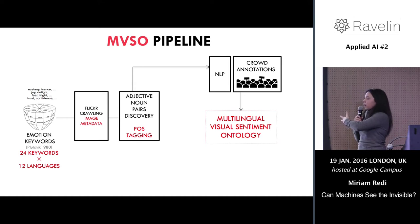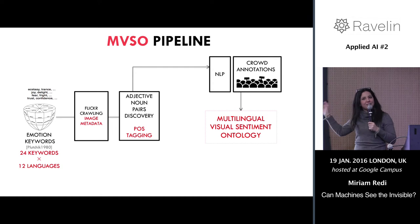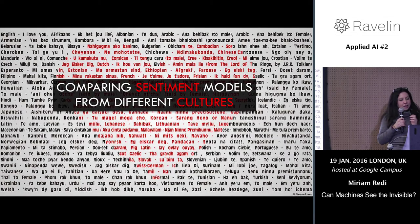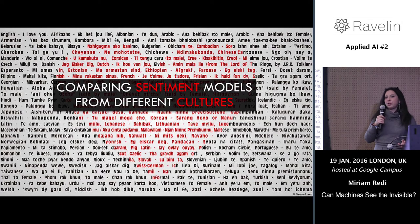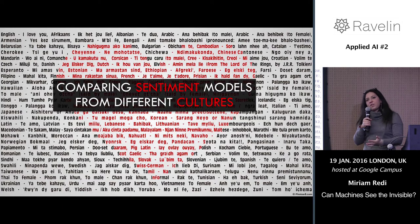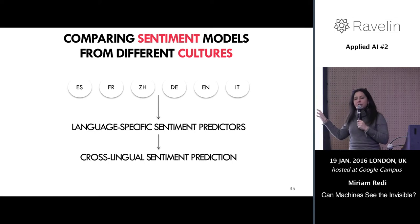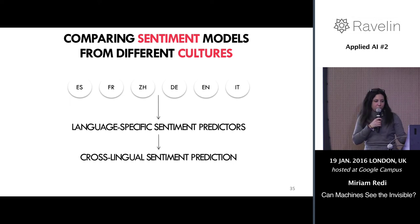To build this dataset we had to design an ad hoc pipeline, because this is the first time in the multimedia vision community that we built such a large-scale dataset exploring this dimension. Basically this involved pulling data from Flickr and applying extensive natural language processing, crowdsourcing, visual analysis, and so on. It was a very big work but the important thing is that it's there and you can use it.